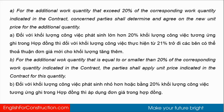B. For the additional work quantity that is equal to or smaller than 20% of the corresponding work quantity indicated in the contract, the parties should apply the unit price indicated in the contract for this quantity.